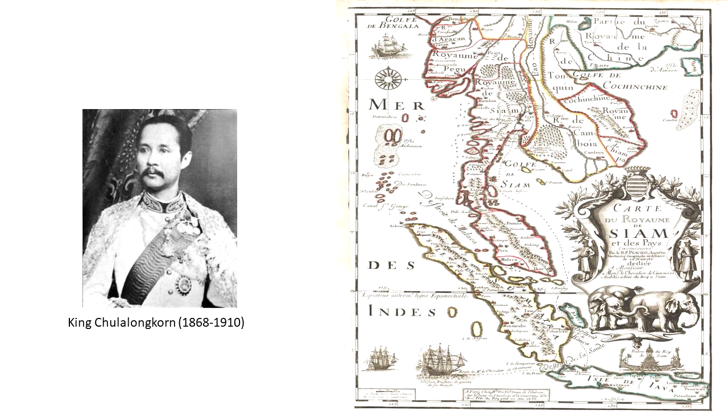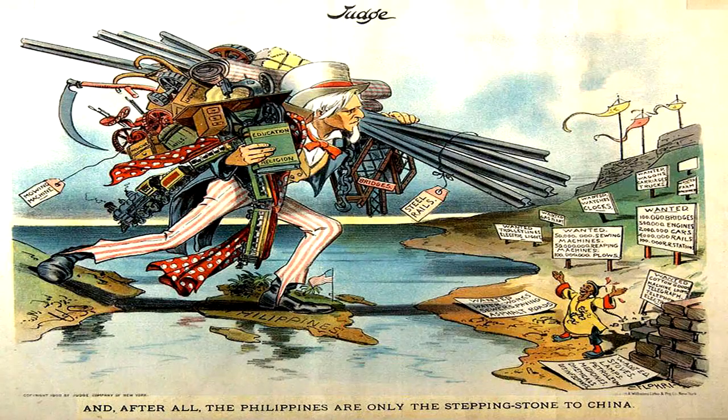The United States became an imperialist power in Asia when in 1898 they took the Philippines from Spain within the context of the Spanish-American War. In the Philippines, the US introduced a form of colonial rule that included public works and economic development projects, improved education and medicine, and transformed the state's structure.